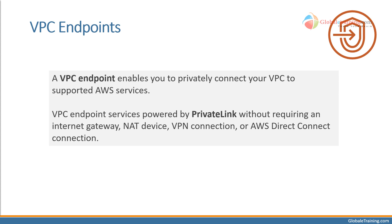VPC endpoint. A VPC endpoint enables you to privately connect your VPC to supported AWS services and VPC endpoint services powered by PrivateLink, without requiring an internet gateway, NAT device, VPN connection, or AWS Direct Connect. When you communicate with any resource or service that has a VPC endpoint, your traffic never leaves the AWS network — it stays within the AWS network and will never hit the internet.